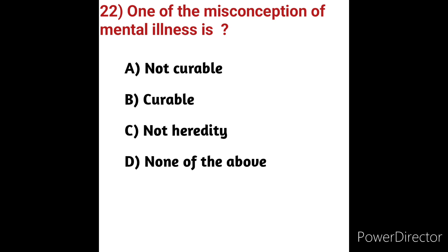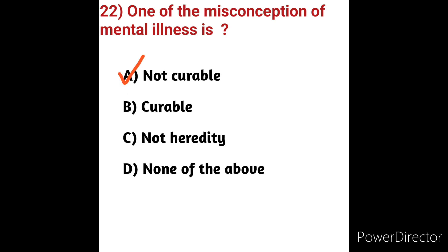Another misconception is that mental illness makes people violent and dangerous. Some conditions such as autism, ADHD, bipolar disorder, major depression, and schizophrenia have hereditary components, though people may mistakenly believe they are not hereditary. The correct answer for the misconception question remains option A: not curable.